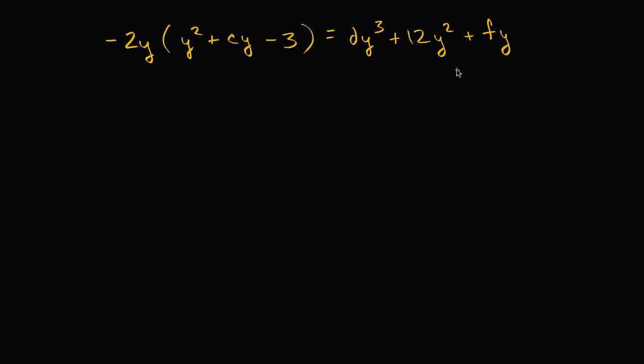One reasonable approach would be let's just try to simplify what we have here on the left hand side. And to simplify that, we can just distribute the negative two y onto this polynomial, onto the y squared plus cy minus three. And then we can set it equal to what we have here on the right and see if we can match up coefficients.